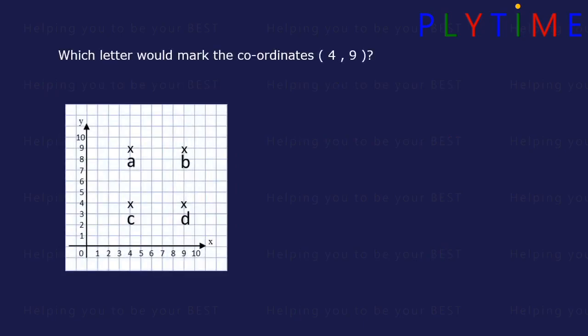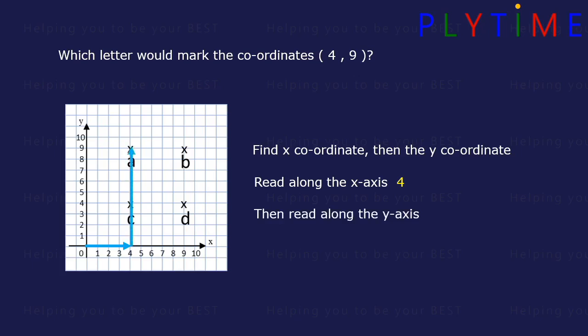Which letter would mark the coordinates 4 and 9? Find the x-coordinate, and then the y-coordinate. The x-coordinate comes first. Read along the x-axis to 4, then read up the y-axis to 9. And the letter that we reach is letter A.